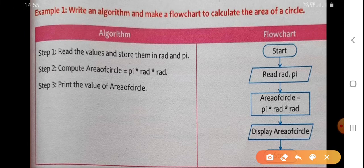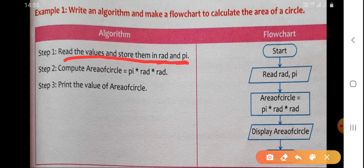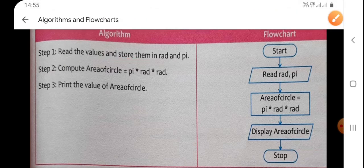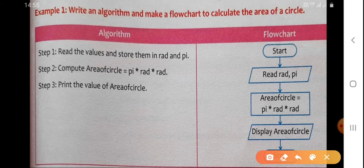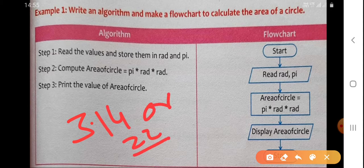There are three steps. The first step is to read the values and store them in 'rad' and 'pi'. These are two variables — 'rad' is a variable where we store the value of the radius of the circle, and 'pi' is a variable where we store the value of pi, which can be 3.14 or 22 upon 7. Pi is actually a constant.